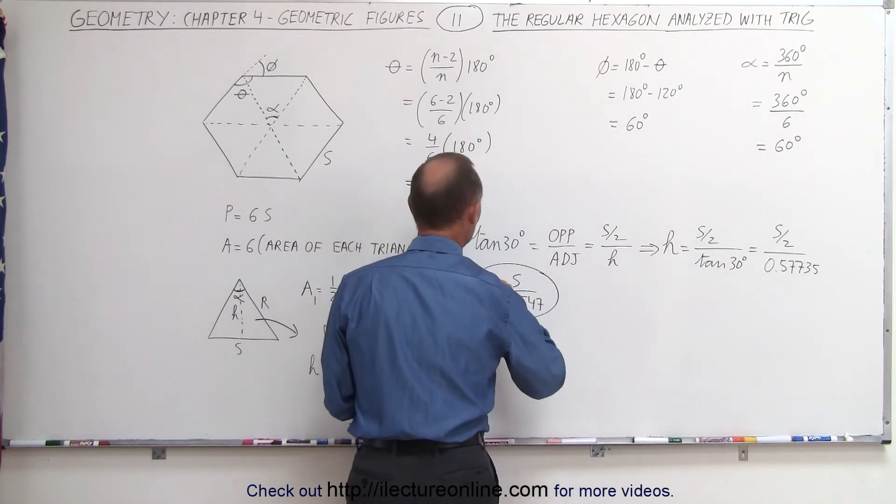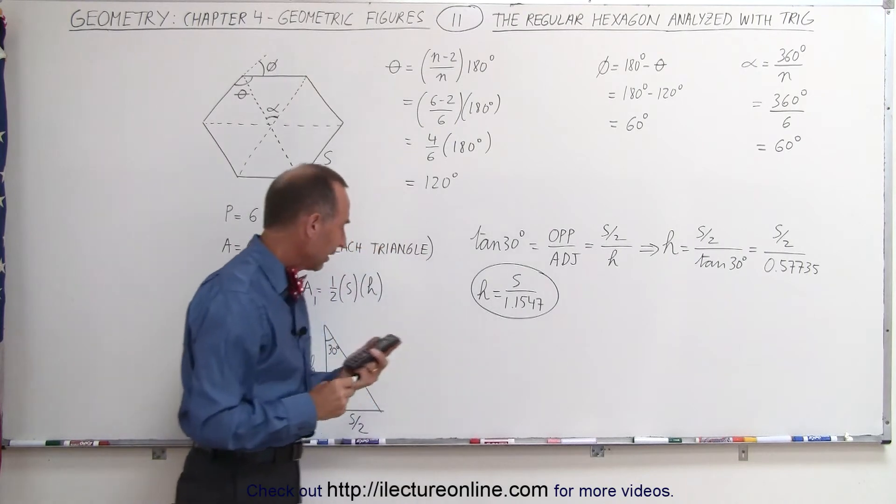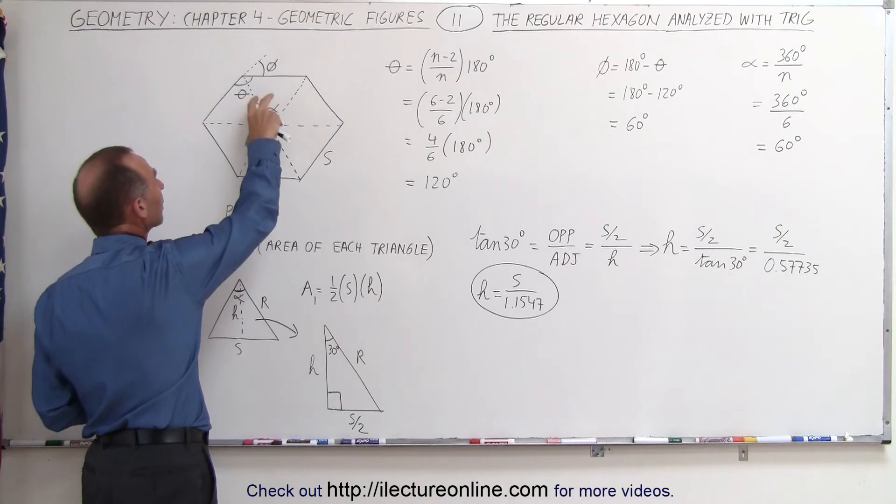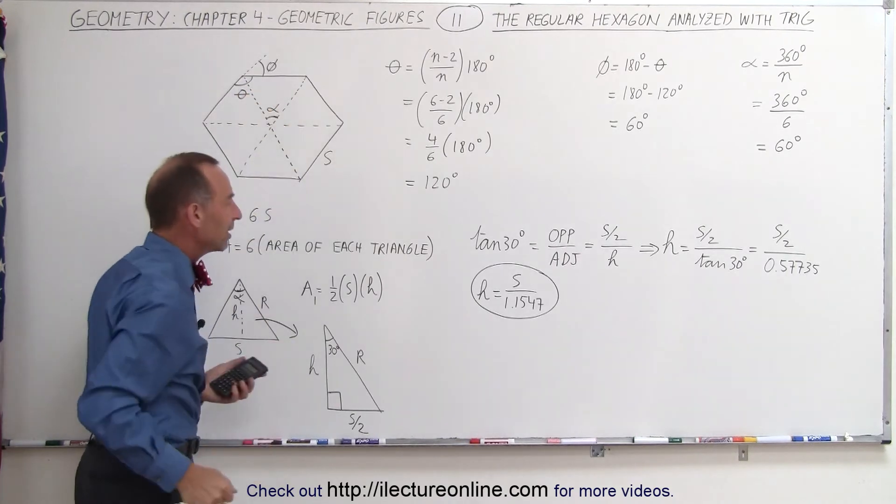That's the relationship between H and S in a triangle derived from dividing a regular hexagon into six equal triangles.